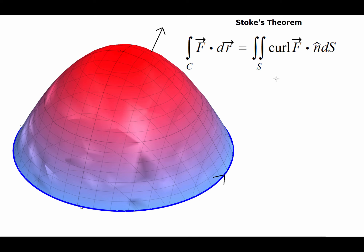So what Stokes' theorem tells us is this: if we have a vector function F which has continuous partial derivatives in an open region containing this surface, then the line integral of the vector function will be the same as the flux of the vector function across the surface S — that is, the surface integral across S with this orientation n — and counterclockwise orientation of the curve as viewed from above.